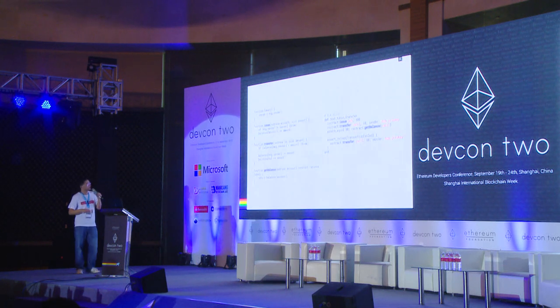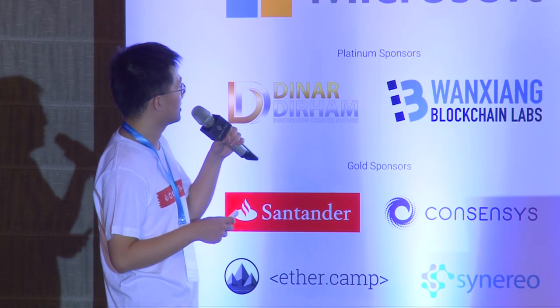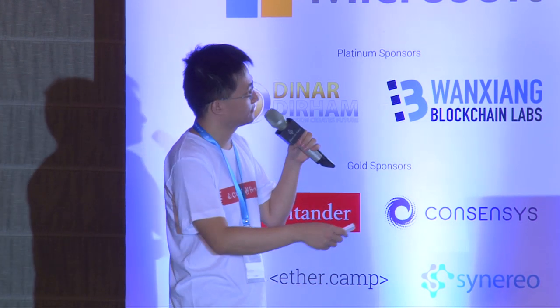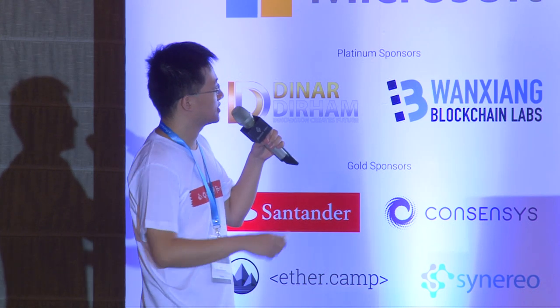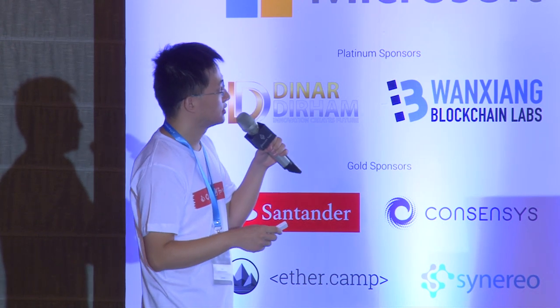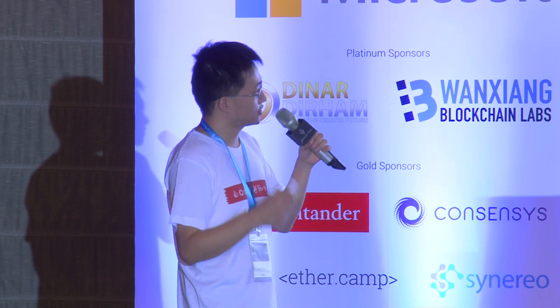Here's a real test. On the left it's a standard token contract — the token contract has an issue function, transfer function, and get balance. On the right hand is the test for the corresponding contract. At the first line, we use `contract.issue Bob, 100`, which means we invoke the issue function to issue Bob 100 tokens. Then we transfer Carol 90 tokens from Bob. Then we make sure that Carol's account has 90 tokens in it.